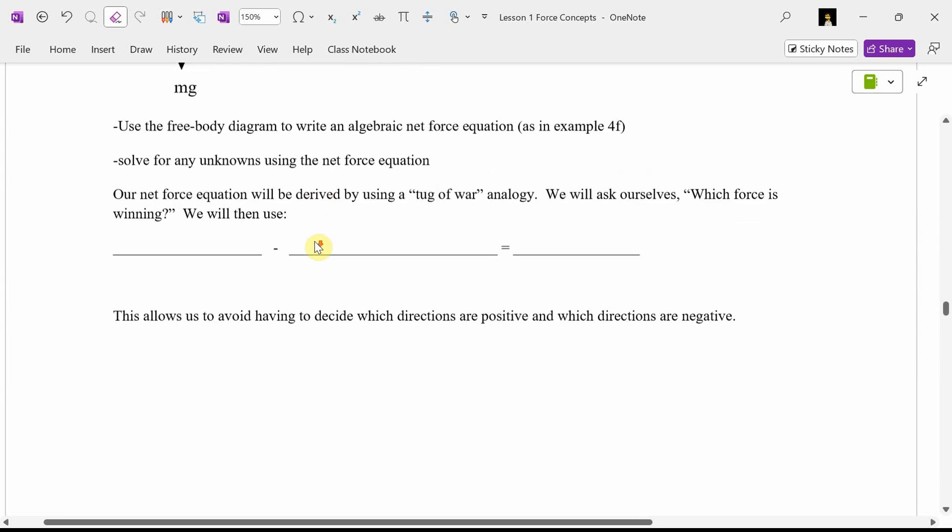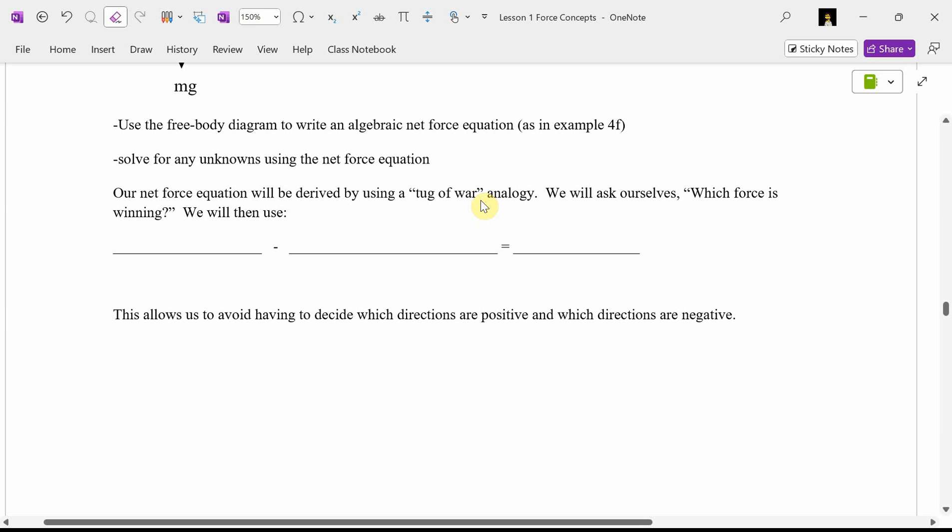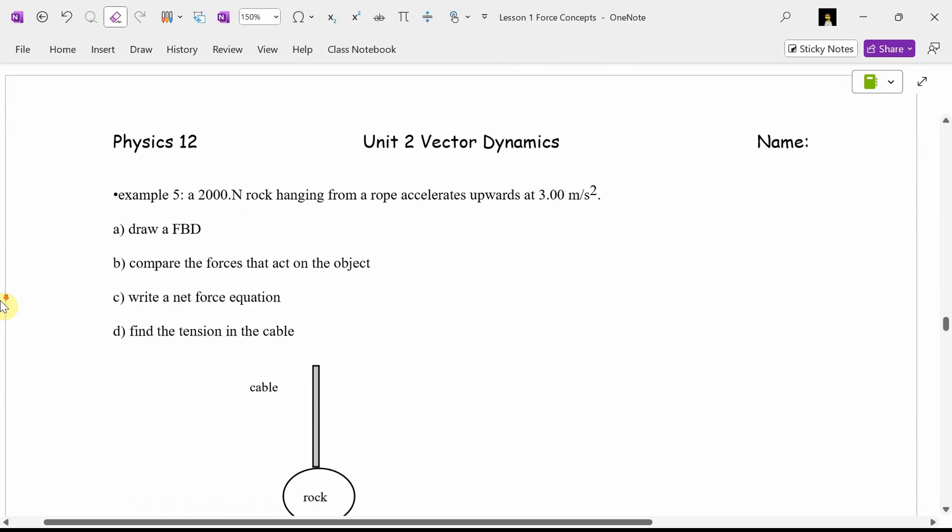My friend who typed this, he actually has his kids show acceleration and velocity on free-body diagrams. He uses squiggly arrows for acceleration and dotted lines for velocity. I don't. I generally like my free-body diagrams to be pristine, forces only. And then we'll use the free-body diagram to write an algebraic net force equation like Philip tried to do in example 4F. We'll solve for any unknowns. Our net force equation will be derived by using a tug-of-war analogy. This year, we'll ask ourselves, which force is winning? Which force is bigger? Which way are we accelerating? That's all the same question.